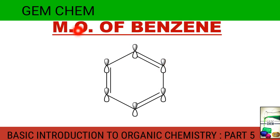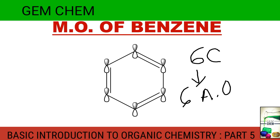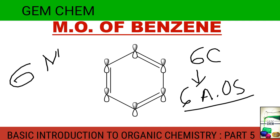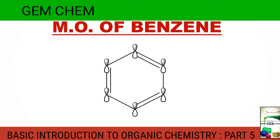Now, the molecular orbital of benzene. Benzene has six carbons, so six atomic orbitals (AOs). These combine to form six molecular orbitals. Different types of combinations produce the various MO levels.